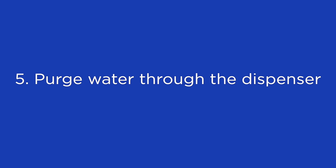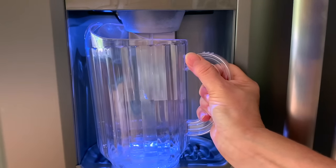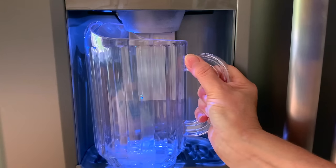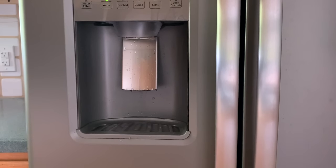Purge water through the dispenser and then check for leaks. Purging water through the dispenser gets rid of air in the supply system that can cause leaks. Air trapped in the water lines can force water out of the dispenser.